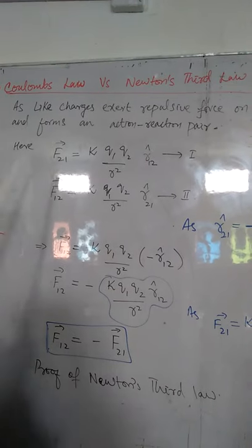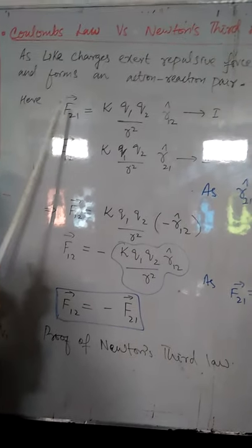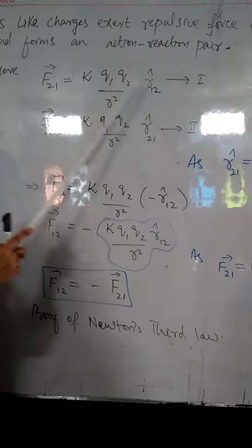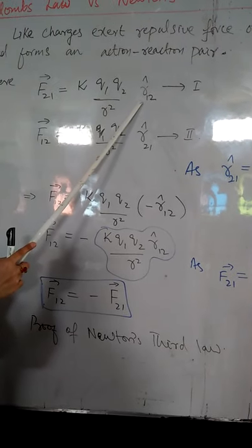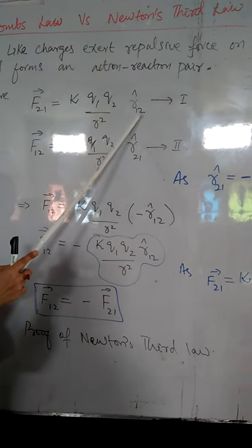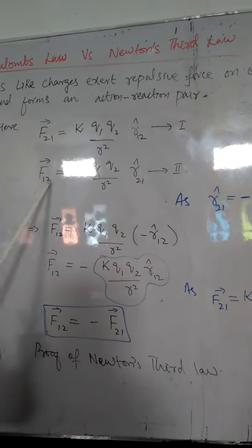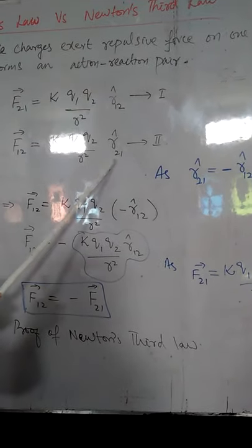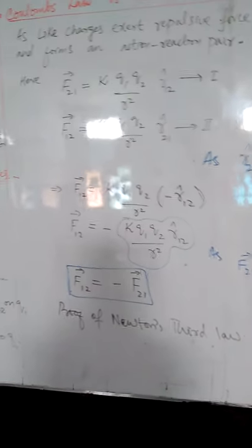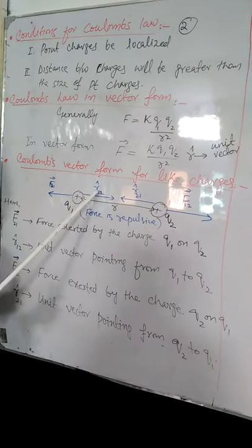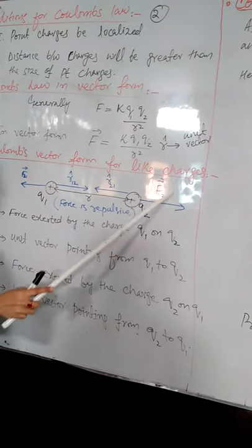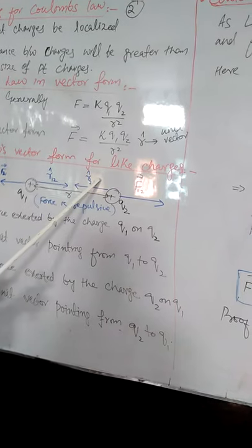Keep focus here. When we are considering F21, then we will consider here the position vector R12. When we are considering F12, then we are taking position vector R21. As you can see in figure, for F21 position vector is R12, for F12 position vector is R21.